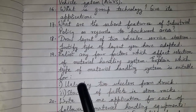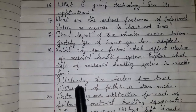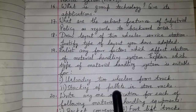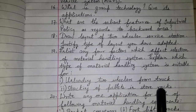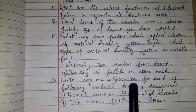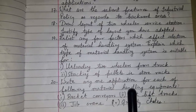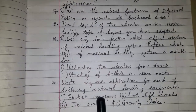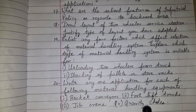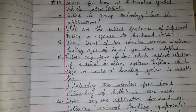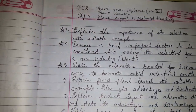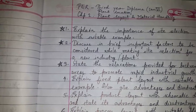Question number nineteen: list any four factors which affect the selection of a material handling system. Explain which type of material handling system is suitable for these activities — loading two-wheelers from a truck, stacking of pallets in store racks. Question number twenty: write any one application of each of the following material handling equipment: bucket conveyor, forklift trucks, jib crane, and gravity chutes.